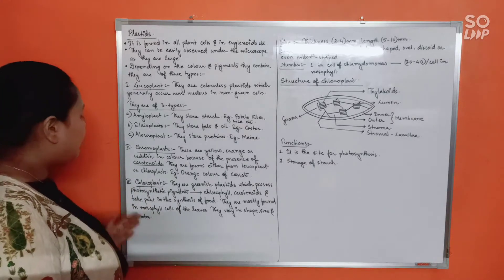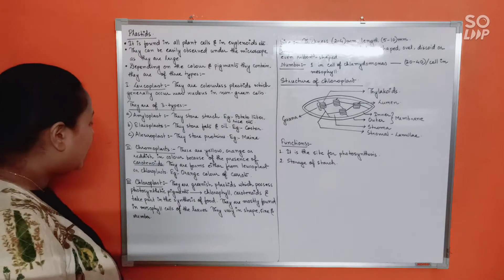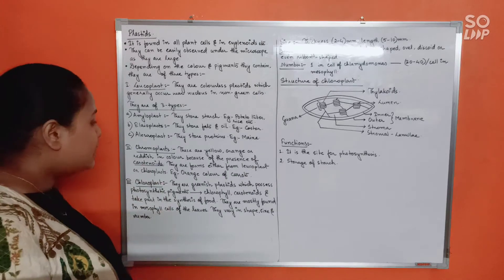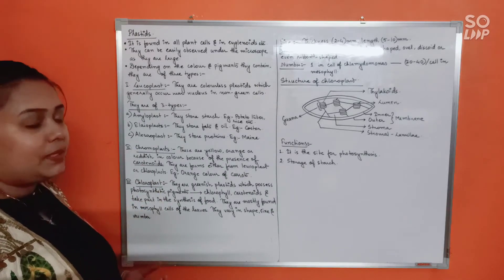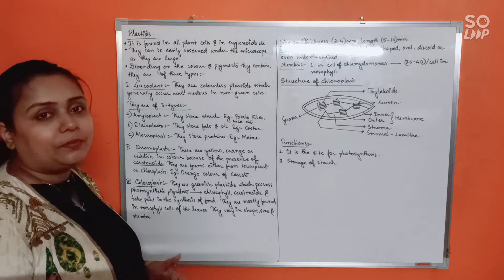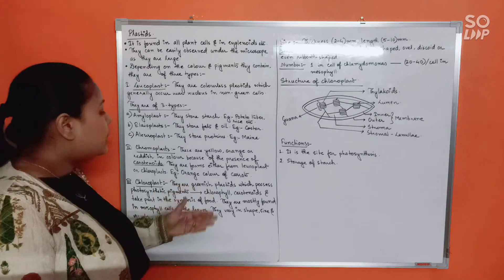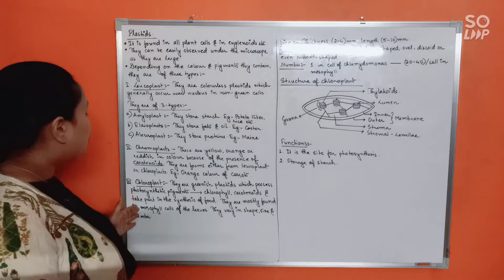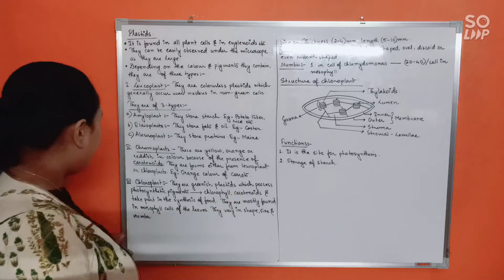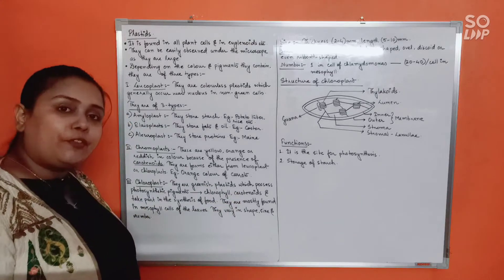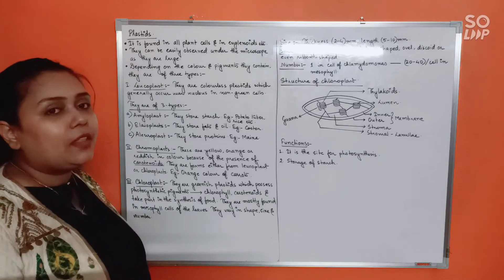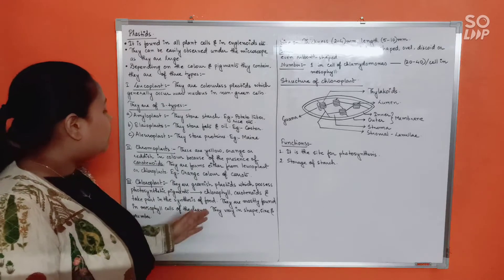Finally, the most important type - chloroplast. These are green-colored plastids because they contain the green pigment responsible for photosynthesis, which is chlorophyll. Chloroplasts possess photosynthetic pigments including chlorophyll and carotenoids, and they take part in the synthesis of food.